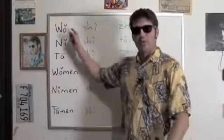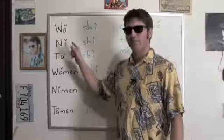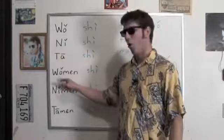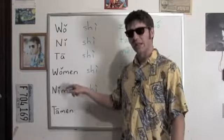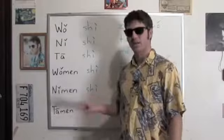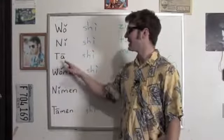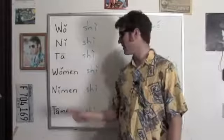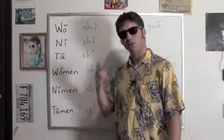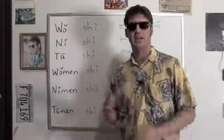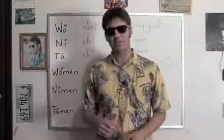Let's review the pronouns: 我 (I), 你 (You), 他 (He/She/It), 我们 (We), 你们 (You guys), 他们 (They). And the verb for 'to be' — whether it's am, are, or is — it's all the same: 是.